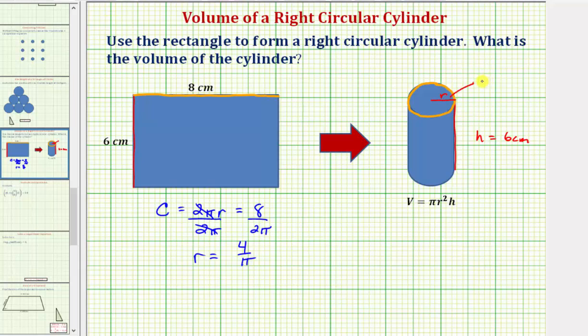So now we know the radius r is equal to four divided by π centimeters. We can determine the volume of the right circular cylinder. The volume V is equal to π times r squared, so we'd have times four divided by π squared times the height of six.